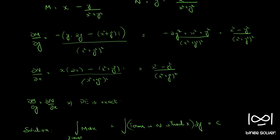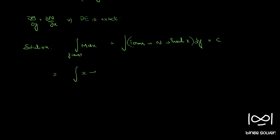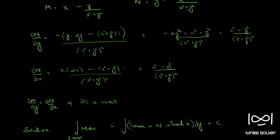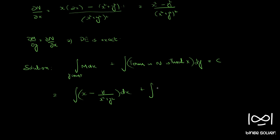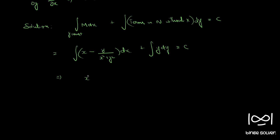So we compute: integral of (x minus y divided by x squared plus y squared) dx, plus integral of terms in N without x. Checking N, the only term without x is y, so we have y dy. This gives x squared over 2 (with y as constant) plus the integral of y times (1 divided by x squared plus y squared) dx, plus y squared over 2, equals c.